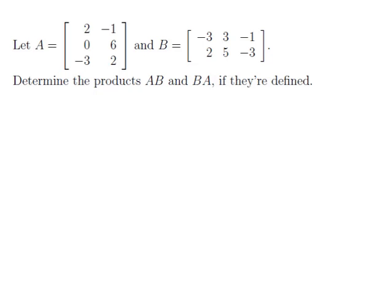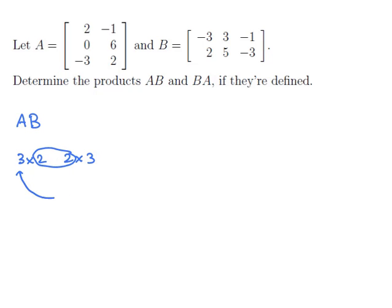Let's first work on the product AB. Before we do the calculation, let's make sure that this is defined. A is a 3 by 2 matrix and B is a 2 by 3 matrix. Since these numbers on the inside match, the product is defined. The outer values tell us the product should be a 3 by 3 matrix. So AB is defined and is a 3 by 3 matrix.